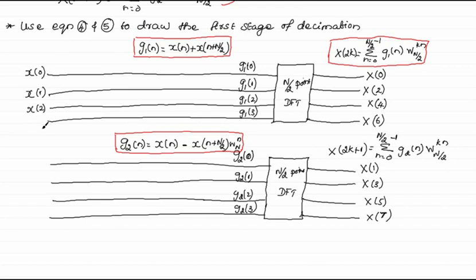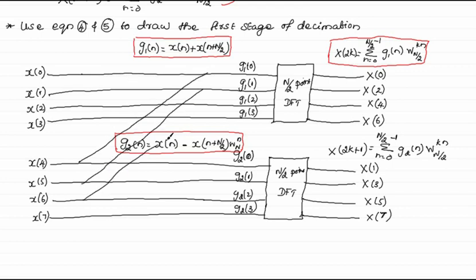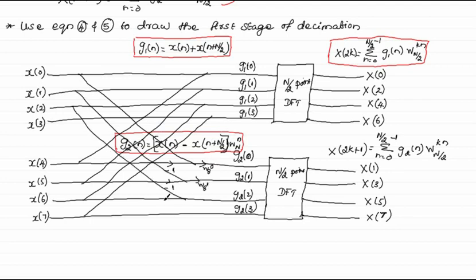Input is given by x of N. G1 of 0 is equal to x of 0 plus x of 0 plus 4, and similarly for other values of G1 of N. G2 of 0 is equal to x of 0 minus x of 4 multiplied with W of 8 power 0, and similarly for other values of G2 of N.